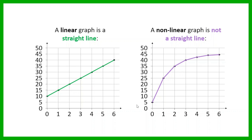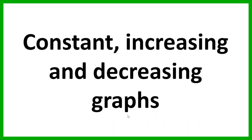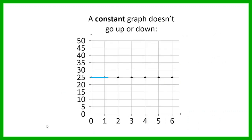That is one feature we can look at when interpreting graphs — whether or not it is linear. Then we have constant, increasing, and decreasing graphs. If a graph is constant, then as you move from left to right across the graph, it doesn't go up or down. It just stays flat — it stays horizontal. That means this value is not changing. As the independent variable changes, the dependent variable is remaining constant.